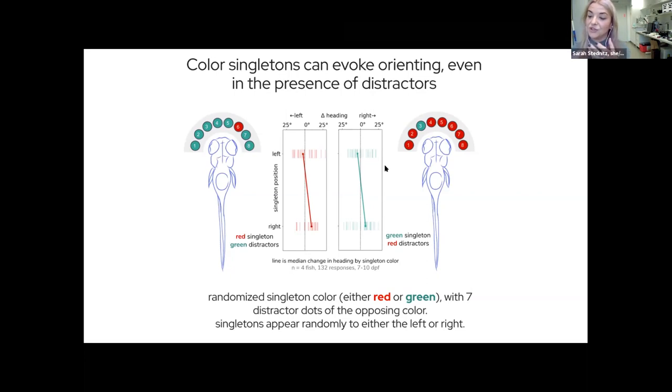What we're very excited about is that we are able to bias motion towards the side that the unique stimulus is placed on, and that's regardless of whether it's a red singleton with green distractors or a green singleton with red distractors. So the next step for us now that we've demonstrated that this tiny little brain is making this kind of computation is to take this onto the microscope.